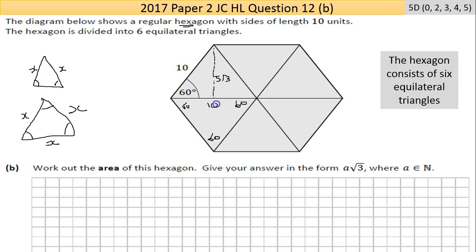That means this side is 10, this side is 10, and this side is 10. We're being asked to find the area of this hexagon. Give your answer in the form a√3 where a is a natural number, a positive whole number. You could use half ab sin C or half base by height would work perfectly well.